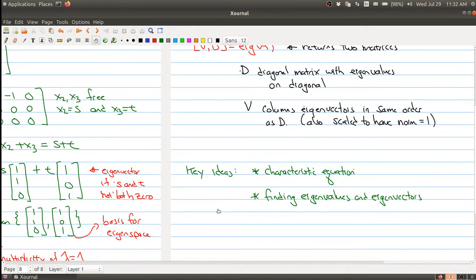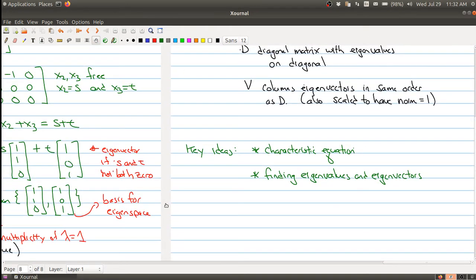There's a lot of good information in today's lecture. Some of the key ideas are the characteristic equation, and we practiced finding eigenvalues and eigenvectors. That's it for today's lecture. In the next lecture, lecture 30, we're going to start talking about the diagonalization of a matrix. Until then.